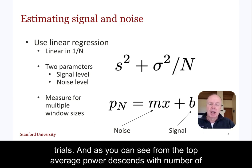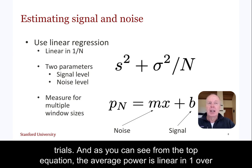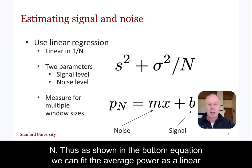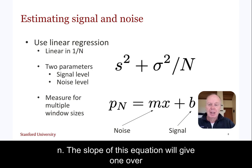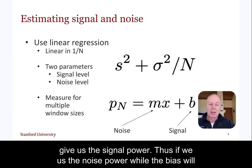We know the average power descends with number of trials, and as you can see from the top equation, average power is linear in 1 over n. Thus, as shown in the bottom equation, we can fit the average power as a linear function of x, which we will compute as 1 over n. The slope of this equation will give us the noise power, while the bias will give us the signal power.